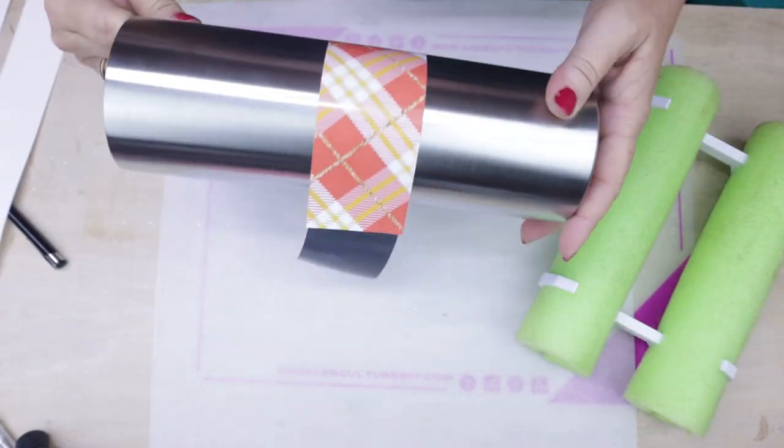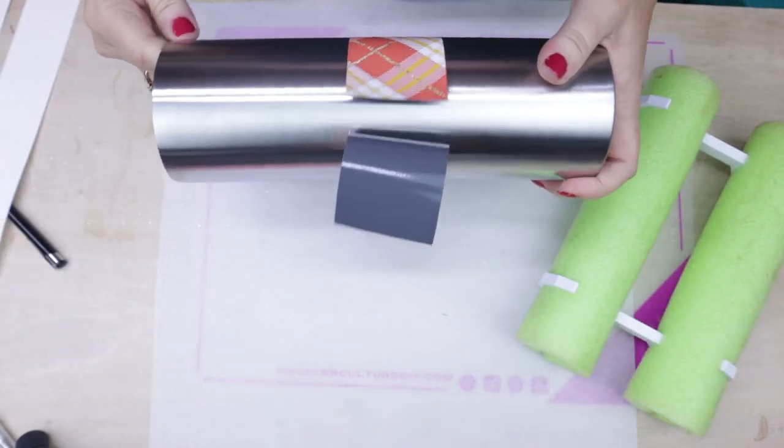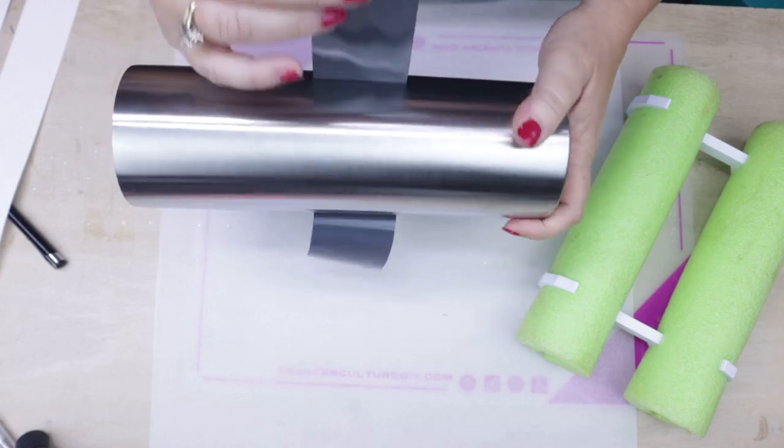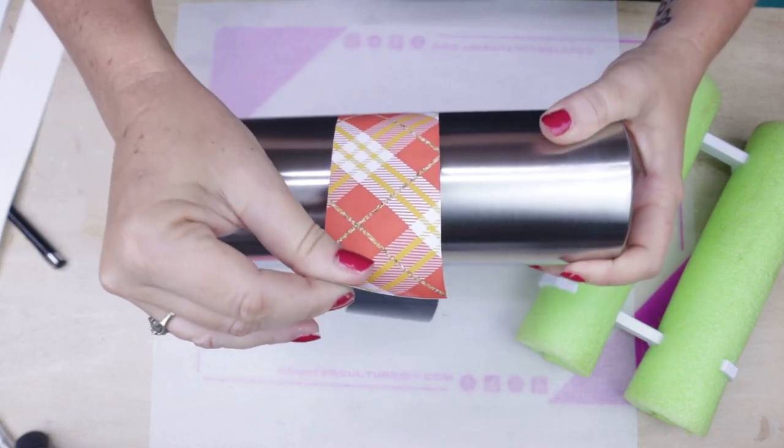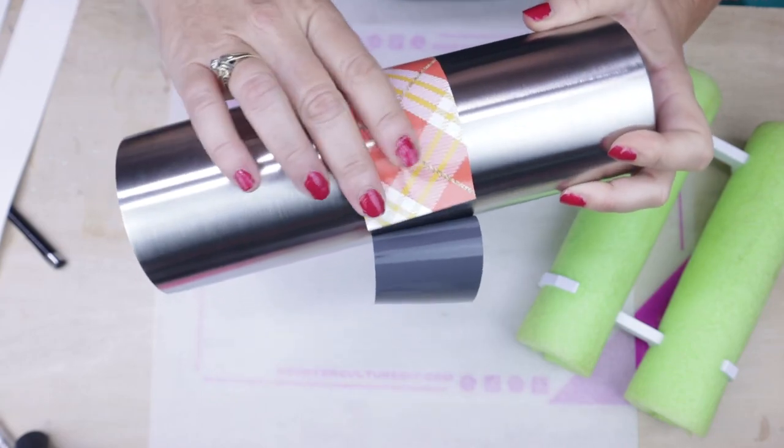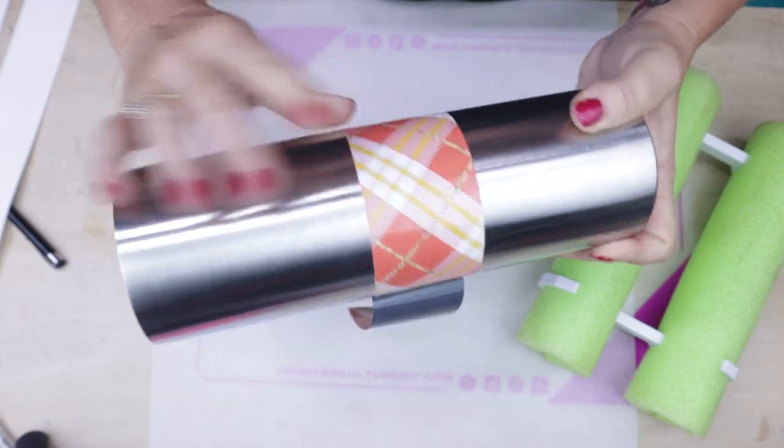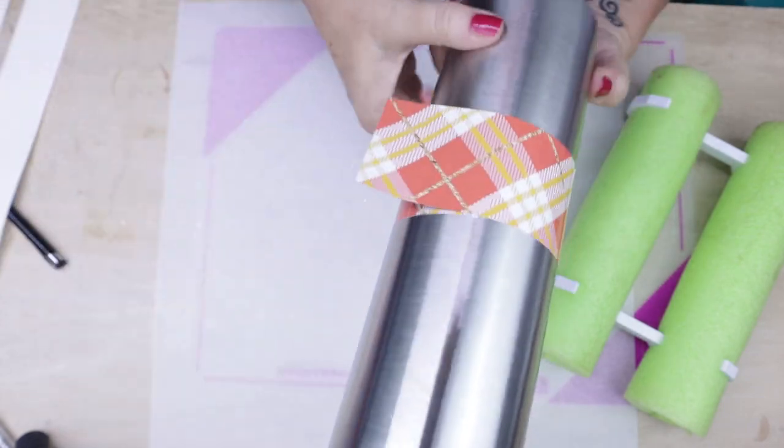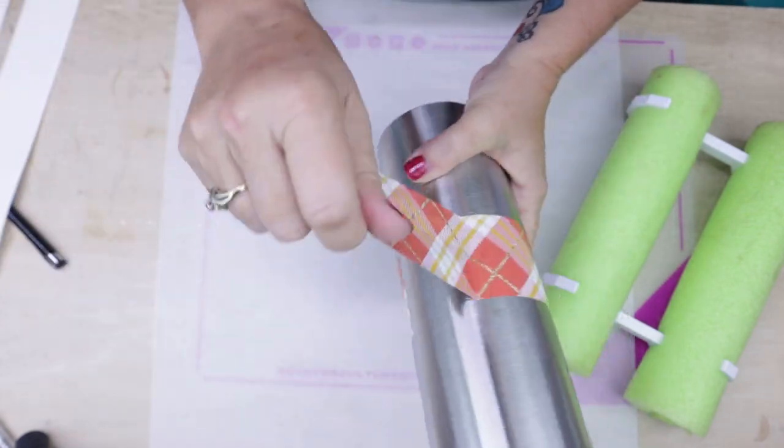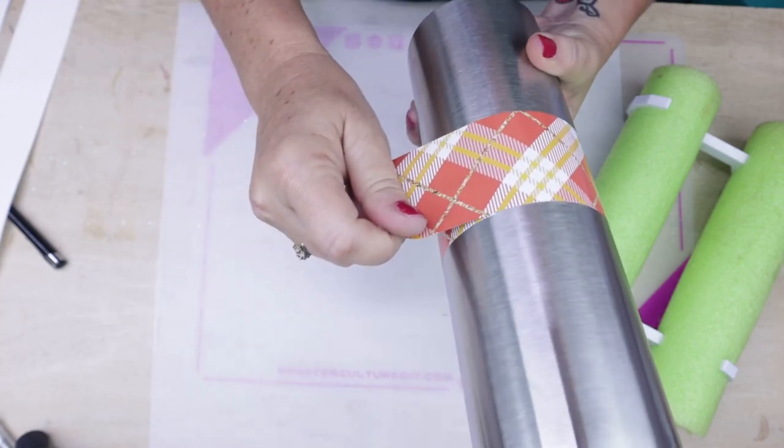You'll notice that the vinyl almost just wants to wrap itself naturally, but you do want to pull this back so we can make sure everything is nice and tight and that we do not have air pockets and or wrinkles. We're going to pull back this side as well and make sure everything is nice and tight and lined up with the other half.